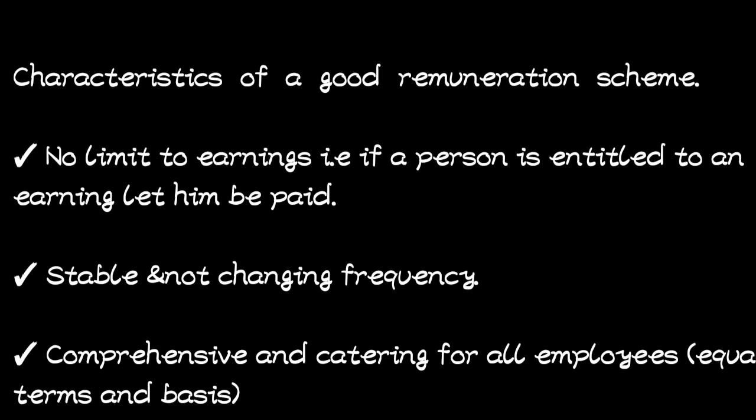Another characteristic is stable and not changing frequency. If you earn maybe 1 million this month, and next month they give you 1.2 million, then the following month they give you 900k — that's not good. So it should be stable and consistent in frequency.